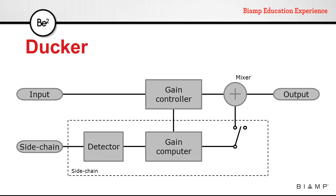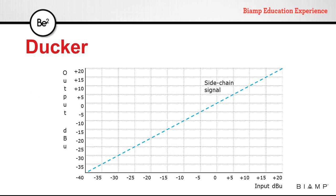The structure is very similar to what we have seen before. The only difference is the ability to mix the sidechain signal with the processed signal. In this case, the detector is only checking that the sidechain input is above the threshold. Once that happens, the gain computer will establish how much gain reduction needs to be applied at the gain controller. The sidechain signal is never altered; it always maintains unity gain.